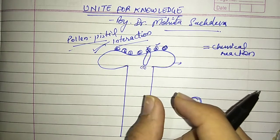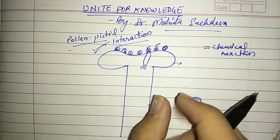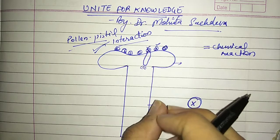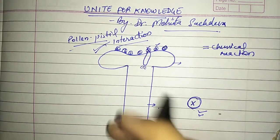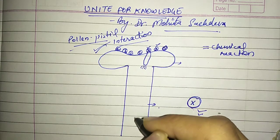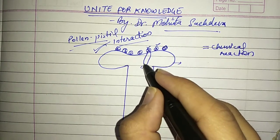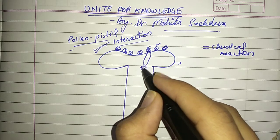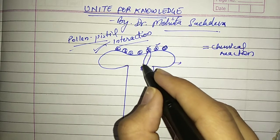It will secrete some digestive enzymes as it moves. The style is completely solid, it's not hollow inside. It can be hollow in very few cases, but mostly it is a solid structure. So it has to digest its way, creating space for itself.